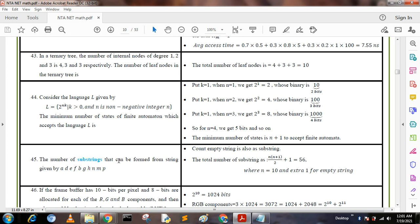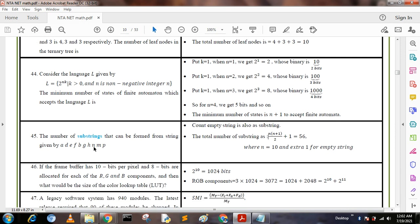The number of substrings that can be formed from the string given by ADEFBGHMNP: To find the answer, we use a simple formula counting empty strings also as a substring. Total number of substrings = n(n+1)/2 + 1, where 1 indicates the empty string. The value of n is 10, plus 1 for the empty string. We put this value and get the answer 56.